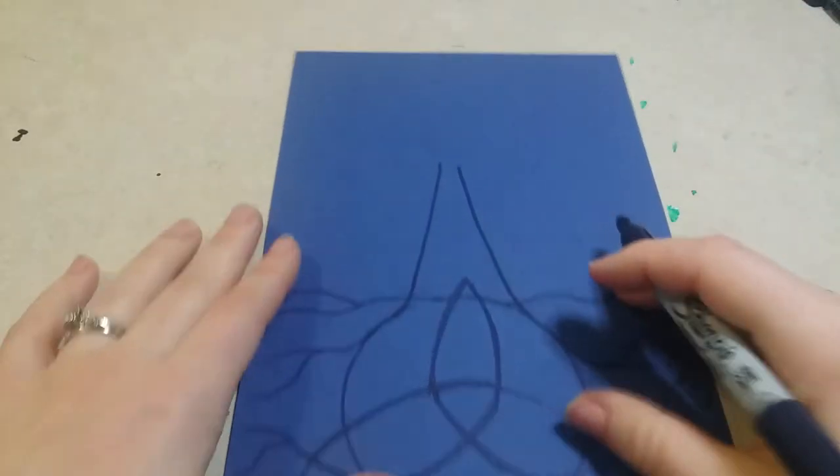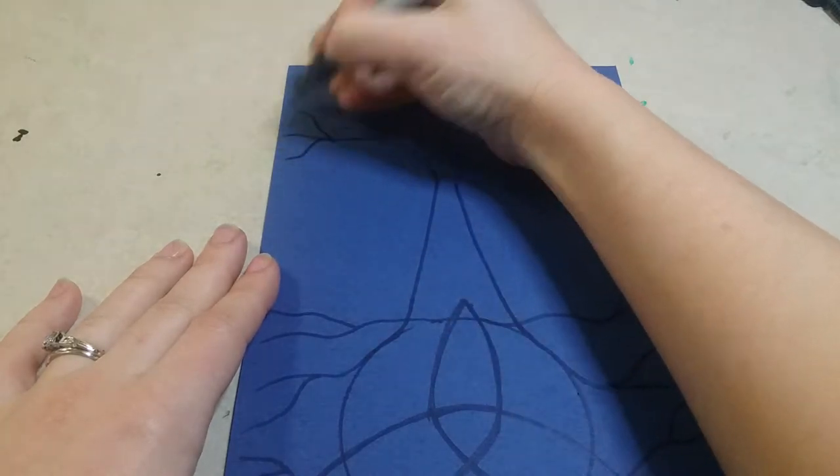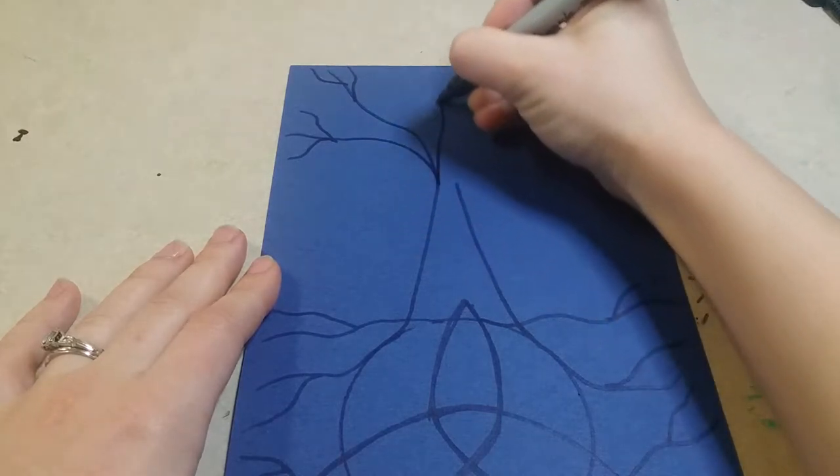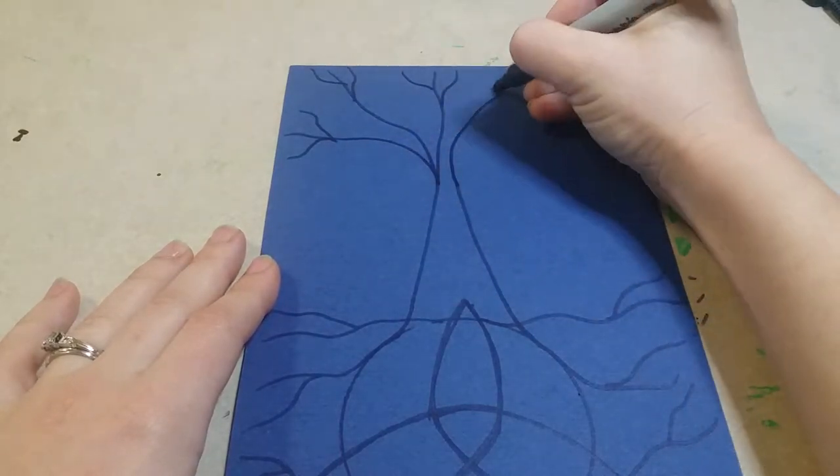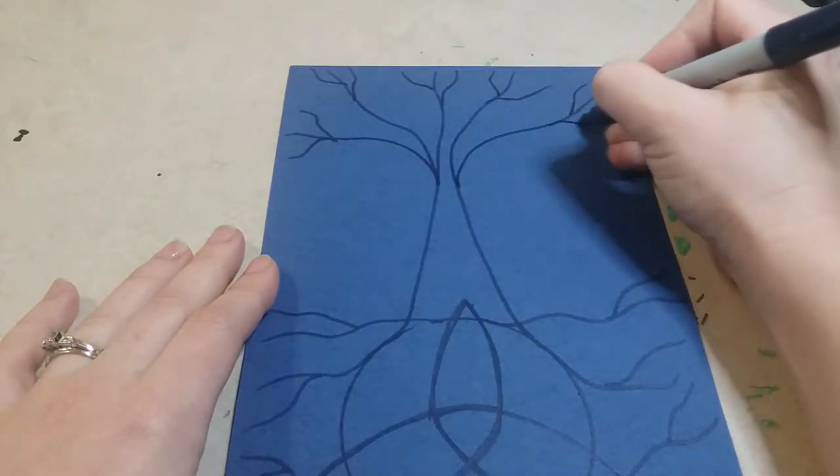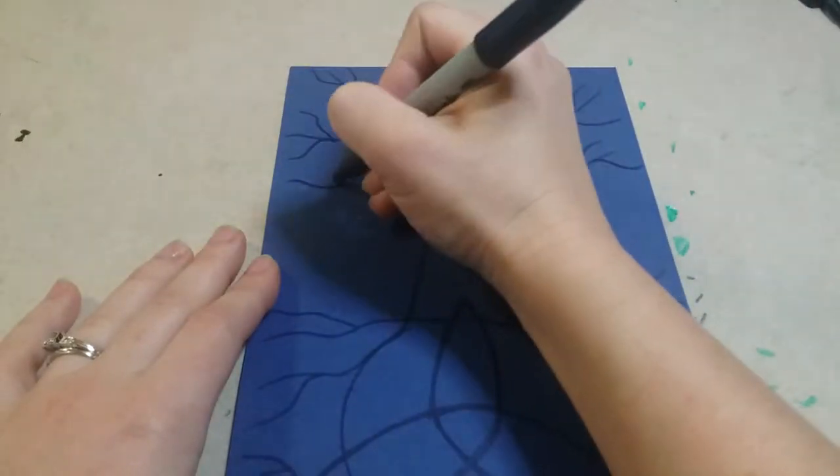Then we're gonna add in our tree branches. So the same thing with the roots, we're doing wavy lines. This time you're gonna do W's, again making sure they're spaced out because when we add the paint they are going to get much thicker. So I'm doing a W with each one here.